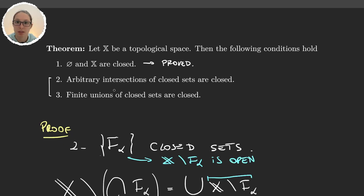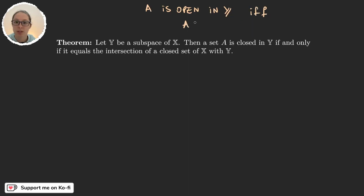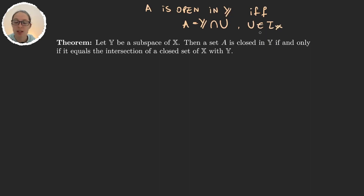Let's move on to the second property about closed sets. Now we have a subspace y of a topological space x, and a closed set in that subspace. We say that this set is closed if and only if it's the intersection of a closed set of x with y. This resembles what we had for open sets: a set a is open in y if and only if a is the intersection of y with an open set u in x. So this gives us the same results for closed sets — a set will be closed in y if it's the intersection of y with a closed set of x.